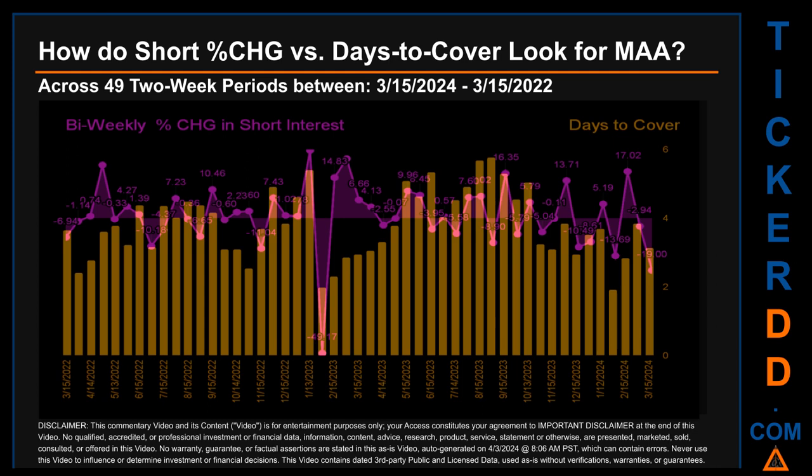Zooming out, I looked across 49 two-week snapshots from the latest found, March 15, 2024. The graph overlays weekly percentage change in short interest against days to cover across these 49 snapshots. The average percentage change of short interest was about 0.91 percent. The largest percentage increase in short interest was 24.69 percent, occurring once on January 13, 2023 settlement date. The largest percentage decrease was minus 49.17 percent, occurring once on January 31, 2023 settlement date. The average days to cover was about 3.8, and the biggest days to cover was 5.76, happening once on August 31, 2023 settlement date.